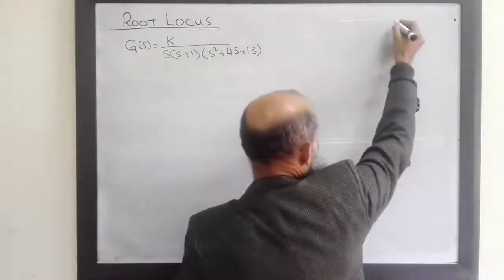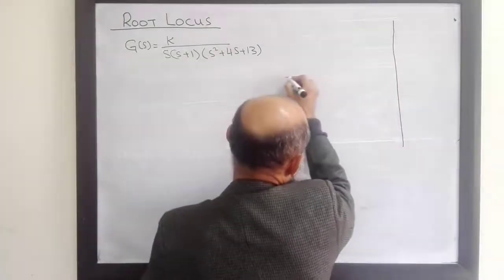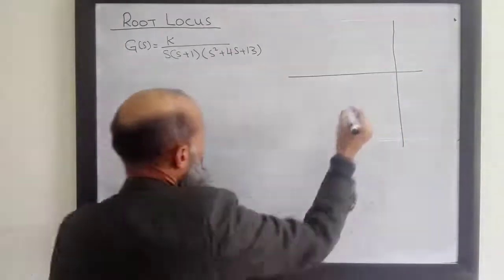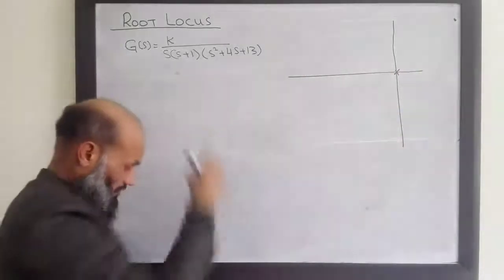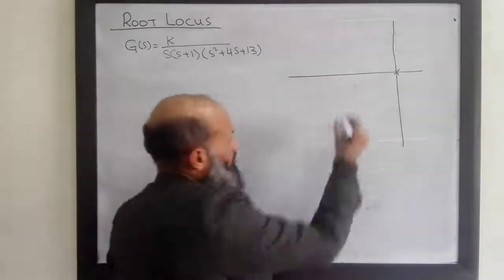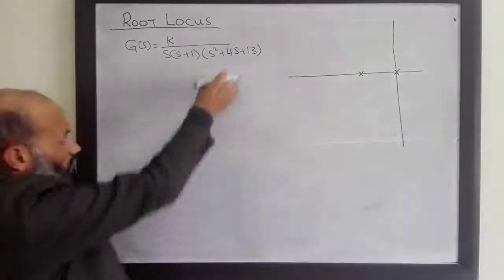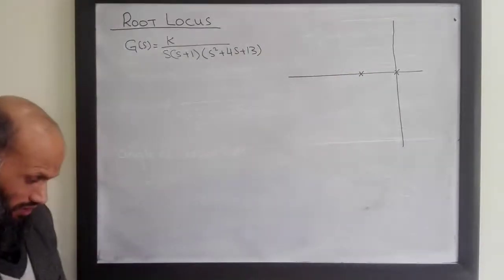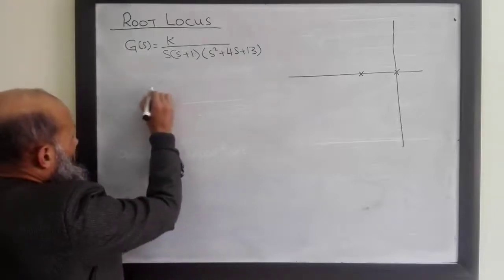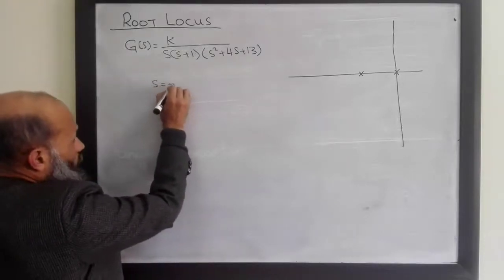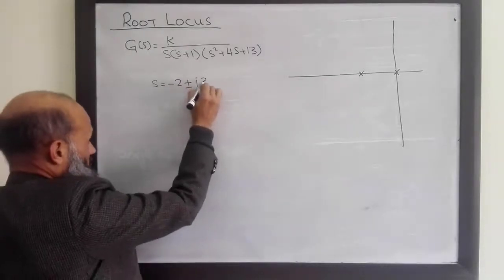The first step is to locate the open-loop poles and zeros in the s-plane. There is a pole at the origin, another pole at s = -1, and two poles which are the roots of the quadratic term, at s = -2 ± j3.